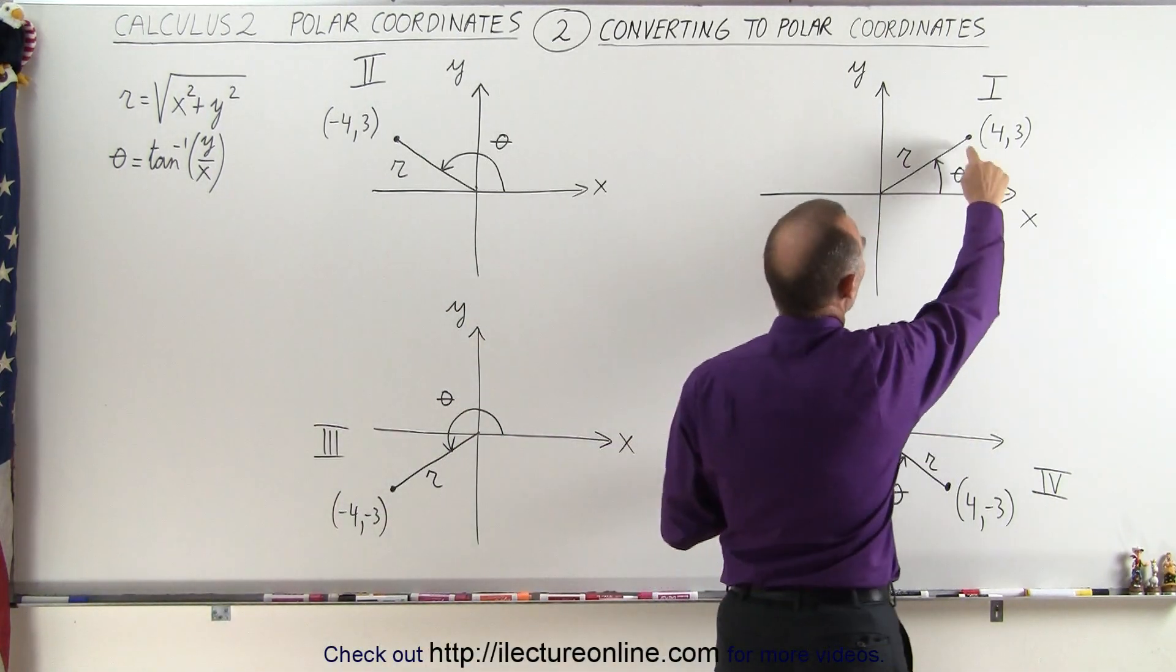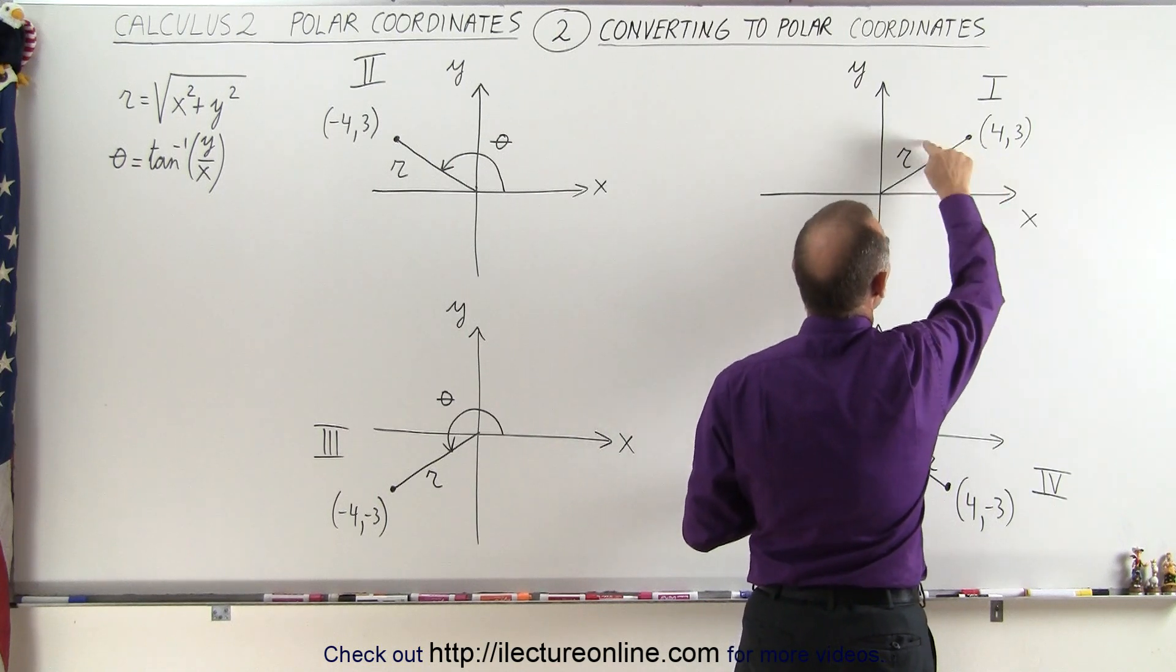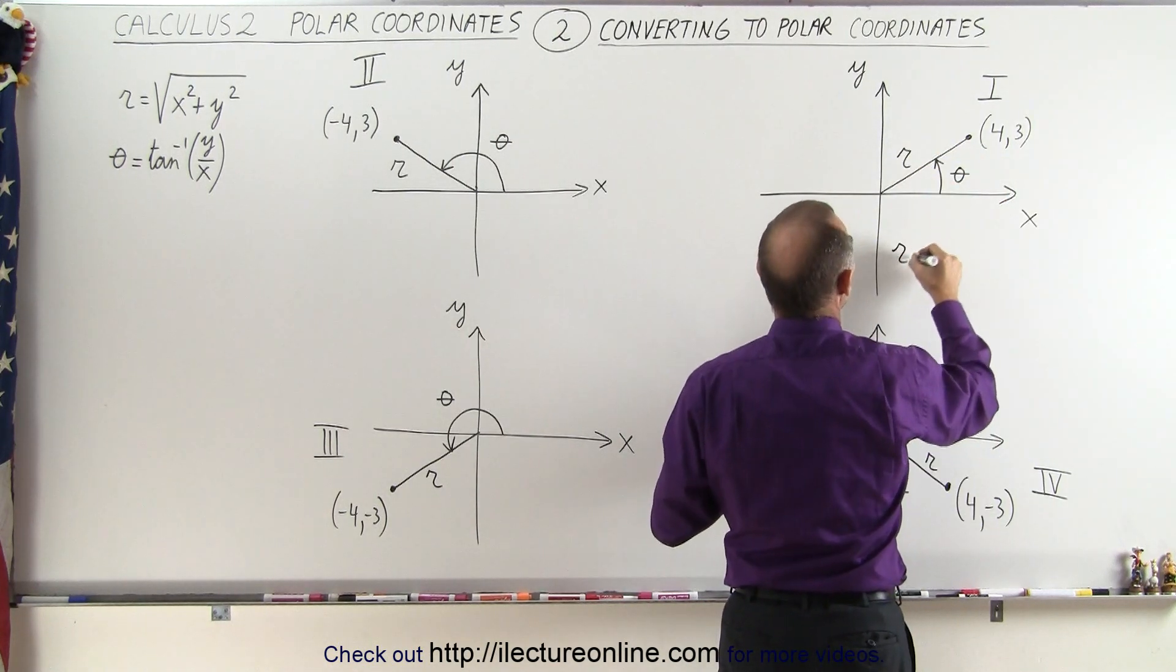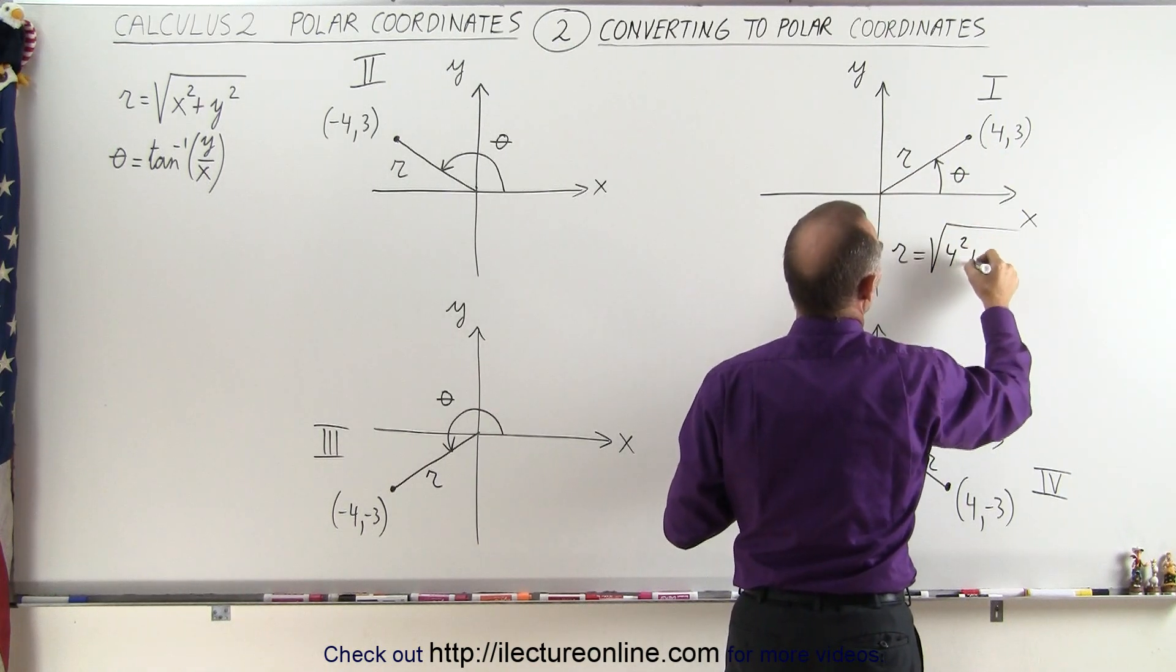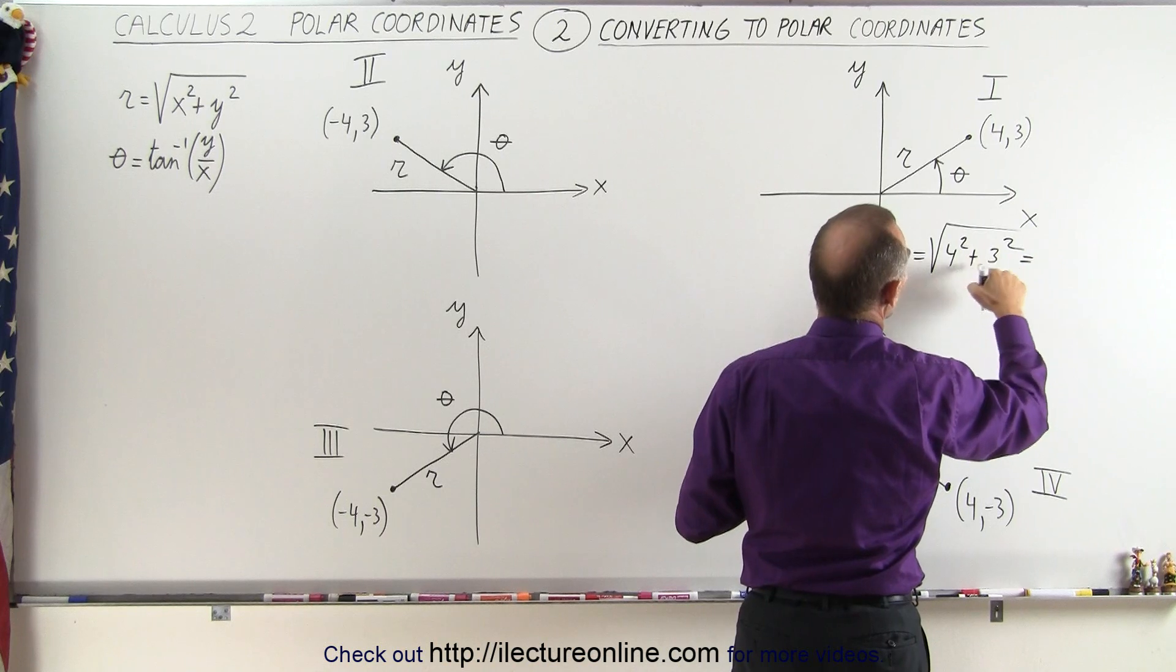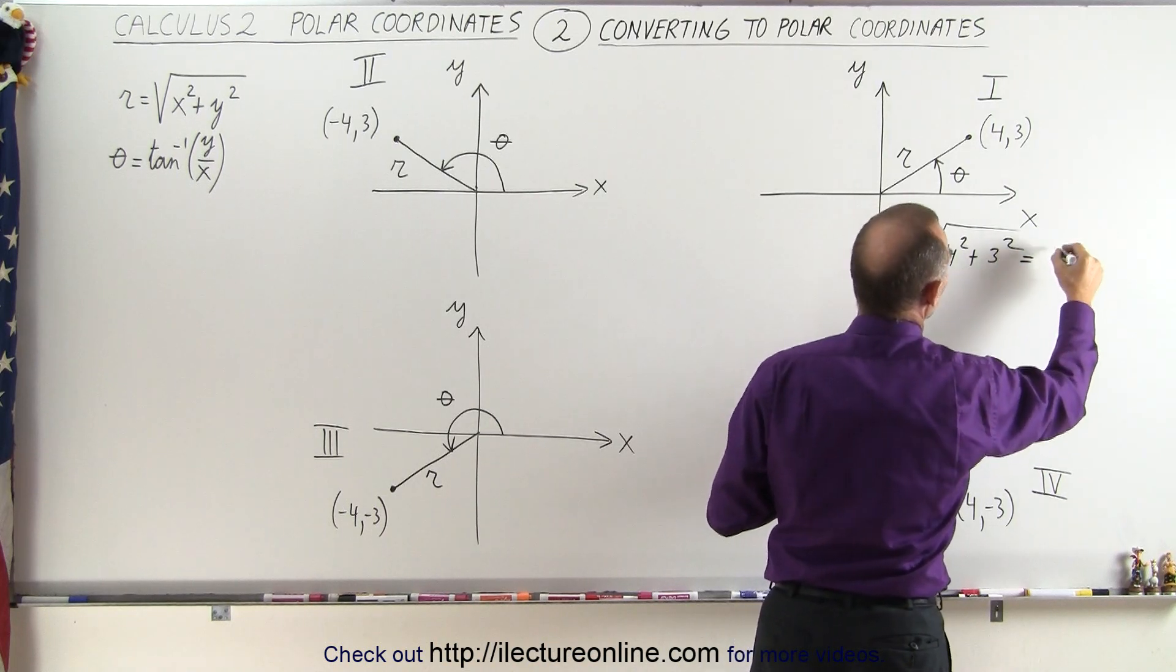So we'll see how that goes. First of all, let's do the easy one. In quadrant 1, we have a point that has an x and a y coordinate, that's 4 and 3. To find r, we take the square root of x squared plus y squared, which is equal to 16 plus 9, which is 25. Take the square root, we get 5.